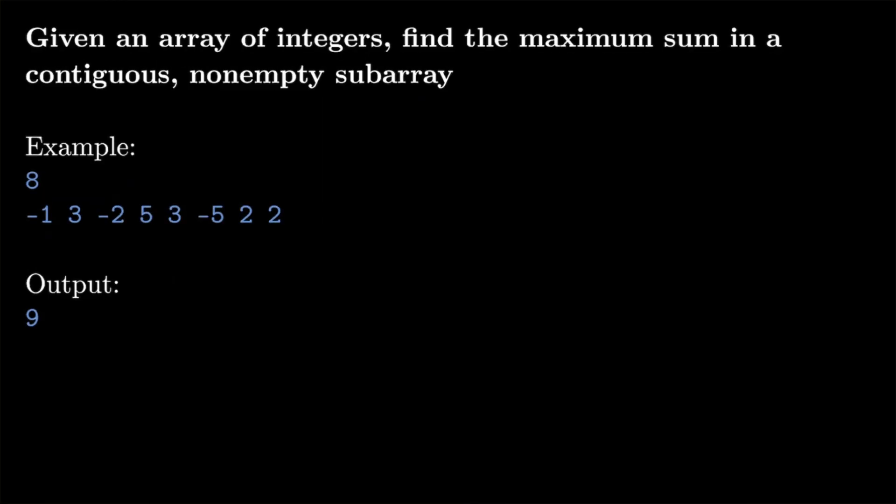We're given an array of integers and we want to find the maximum sum in a contiguous, non-empty subarray. For example, if I have this list with 8 elements consisting of negative 1, 3, negative 2, 5, 3, negative 5, 2, and 2, then I want to find the maximum possible sum by selecting any arbitrary contiguous non-empty subarray.